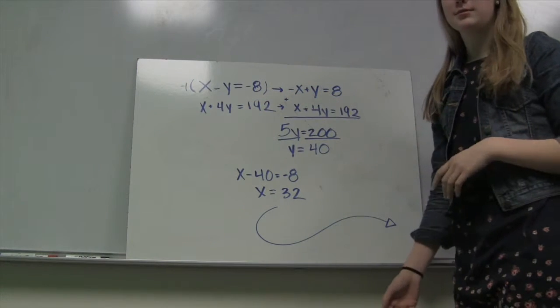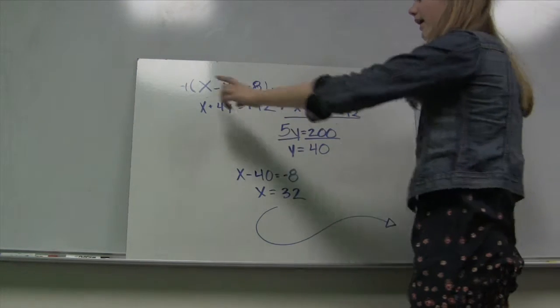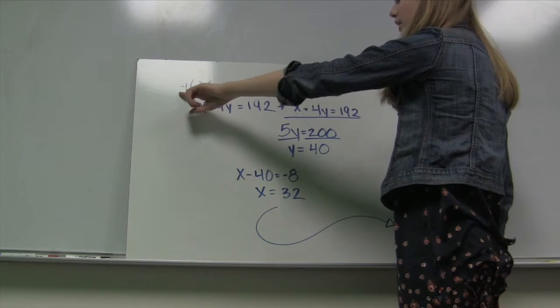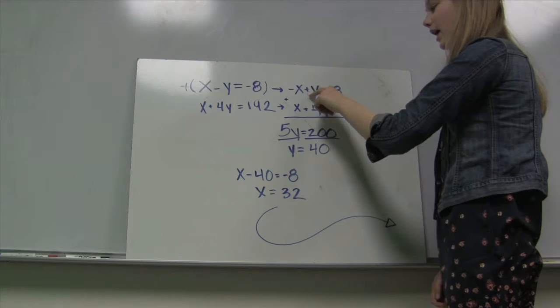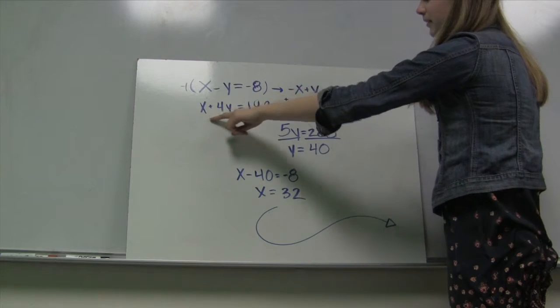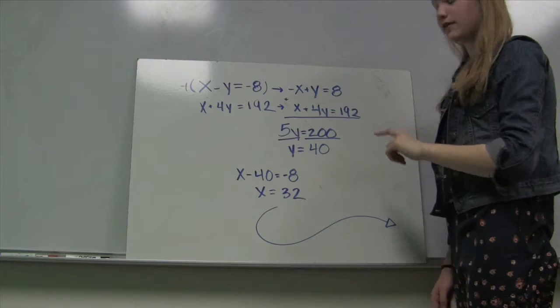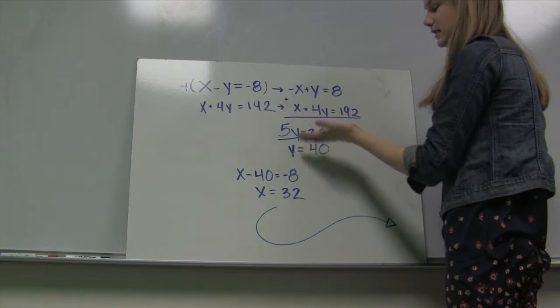So we decided to solve for y first by using elimination. So on the top equation we multiplied the whole thing by negative 1, giving us negative x plus y equals 8, and then our original simplified version of the second equation. So then you add them together and you're given 5y equals 200.